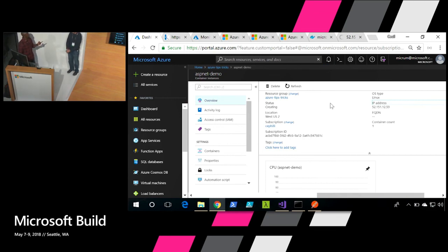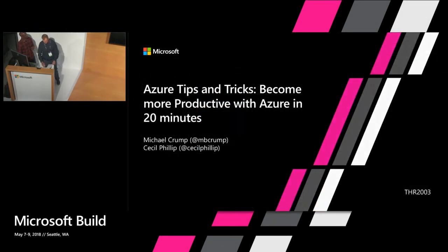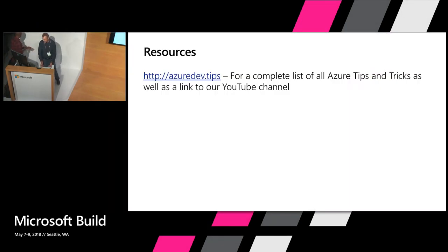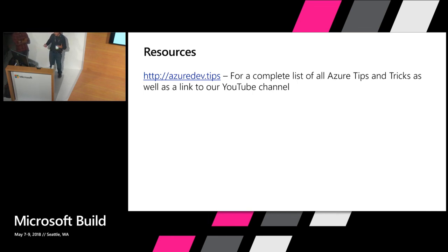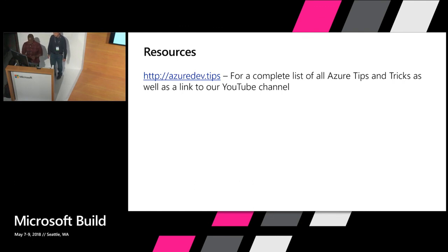Cecil: Michael, do you want to tell them really quick about our website? Michael: Absolutely. So if you're looking for a resource, it's just one — it's just azure.dev.Tips. If you go there, you can actually see a collection — there are about 120 tips included in that whole massive collection, and we're now starting to put in videos. So you can actually select between videos or the written tutorial. Thank you.